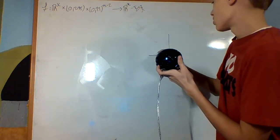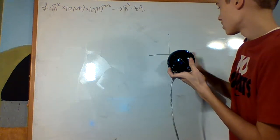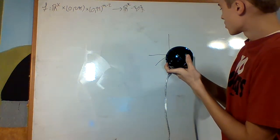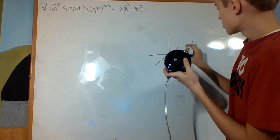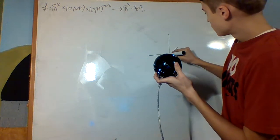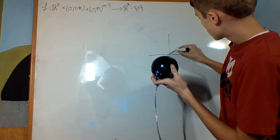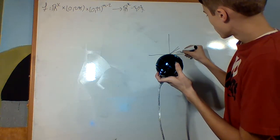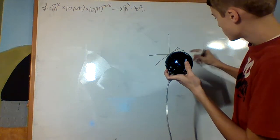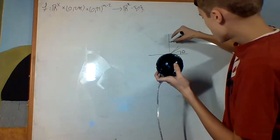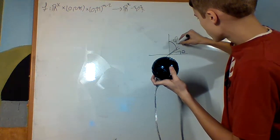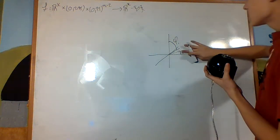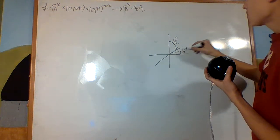For example, in spherical coordinates, you'd have your radius, an angle theta — or phi, depends on who you ask — and then from the top down you'll have phi. To be totally unambiguous, I'll call this one φ₁ and this one φ₂.